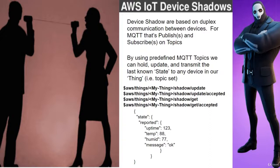All the examples I found on the internet and YouTube were going over how to use it on a single board computer like the Raspberry Pi. I'm going to show you how to use it on the ESP8266 and the ESP32. We have the capability to do that with the MQTT PubSub library, which allows for shadow states — this is probably something you're not going to find anywhere else.